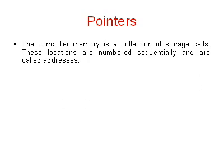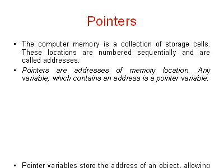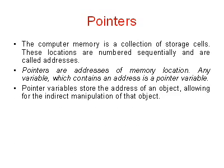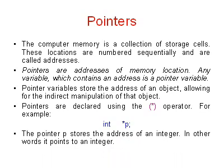As we know, computer memory is a collection of storage cells. These locations are numbered sequentially and are called addresses. Pointers are addresses of memory locations. Any variable which contains an address is a pointer variable. Pointer variables store the address of an object, allowing for the indirect manipulation of that object. Pointers are declared using the star operator. For example, int *p — here p is a pointer variable of integer type. The pointer p stores the address of an integer; in other words it points to an integer.